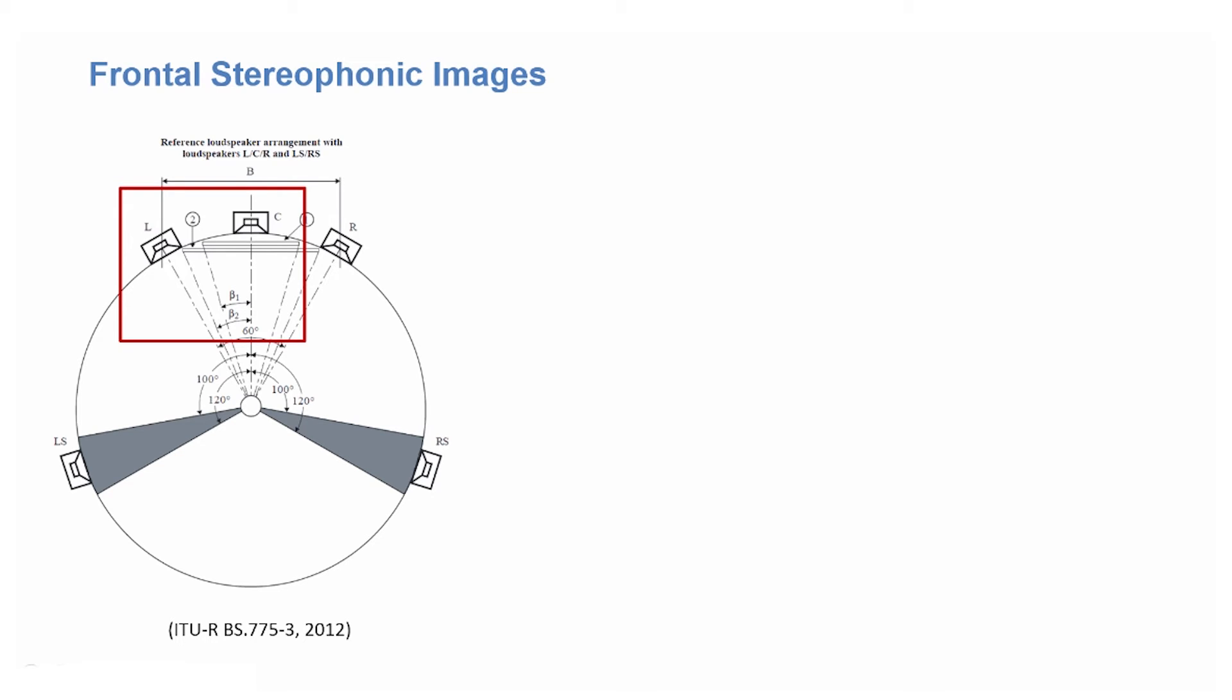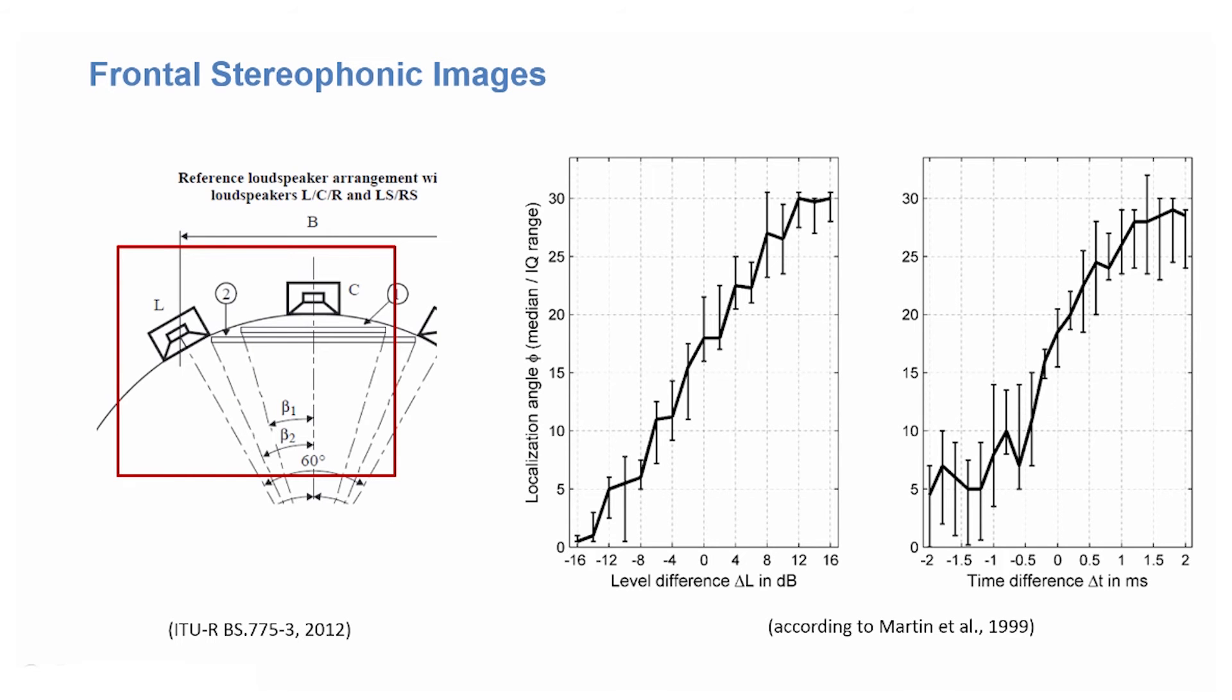Between left and center, we get a similar picture as with left and right, with level differences of about 16 dB and time differences of between 1 and 1.5 ms required to bring phantom sources from one loudspeaker to the other. When you look at the error bars showing the distribution of values over different subjects as interquartile ranges, you can see that level differences tend to produce a more stable localization than time difference.